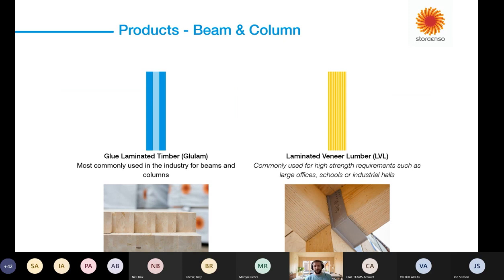When we look at beams and columns, the classic one is glue-laminated timber, and that works for a whole range of solutions. We also see laminated veneer lumber in high-strength situations — large offices, schools, or industrial halls. We're definitely starting to see the industrial hall and logistics space, where spans of around 27–36 metres, working really well for LVL.